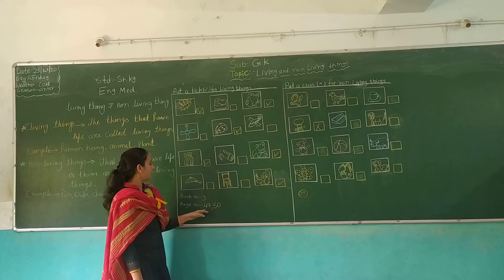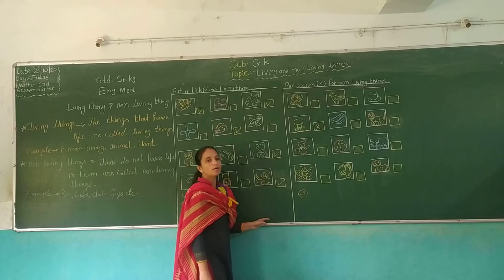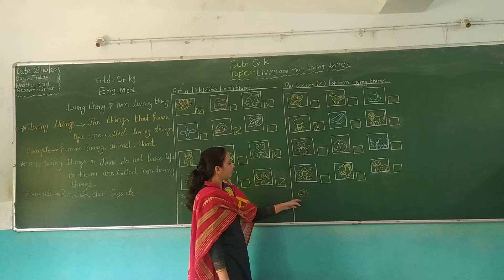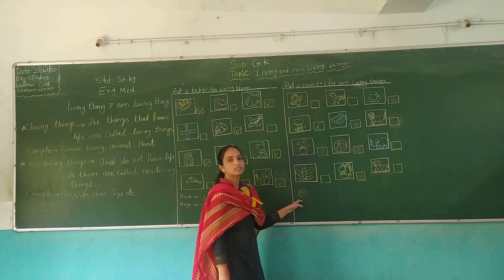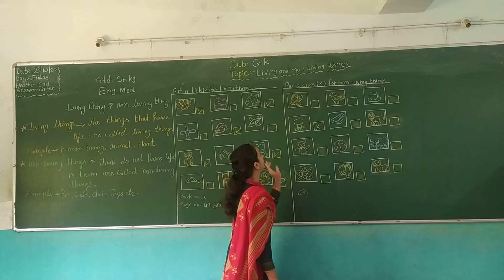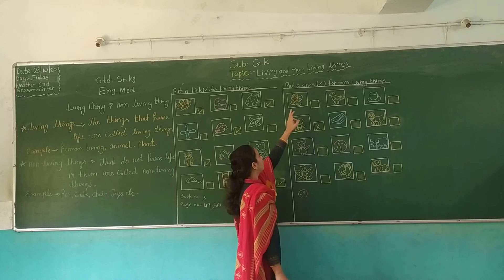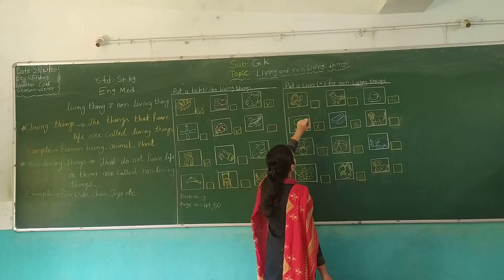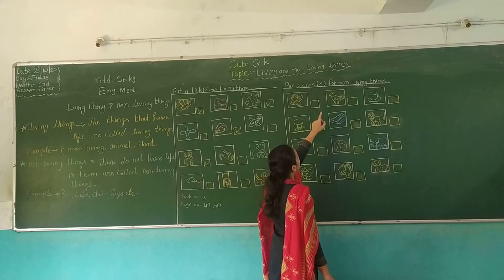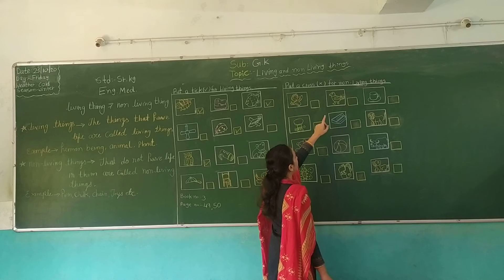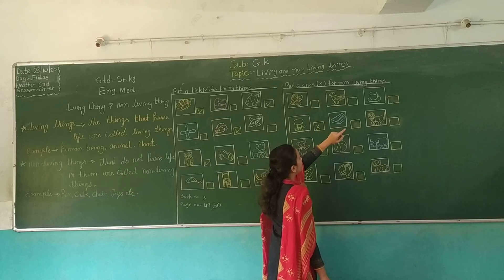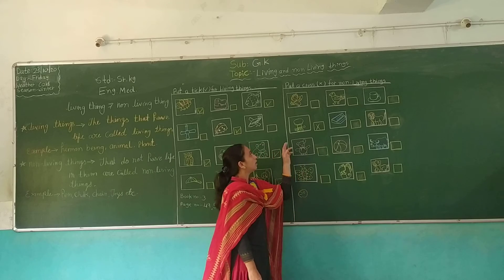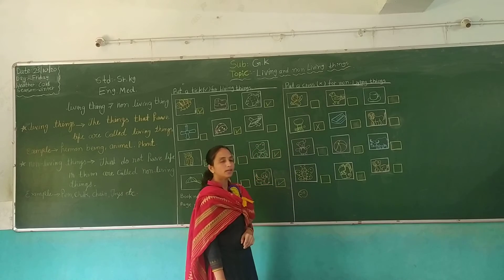Okay, and next, page 50, book number 3. Open your book number 3 and page number 50. Put a cross for non-living things.